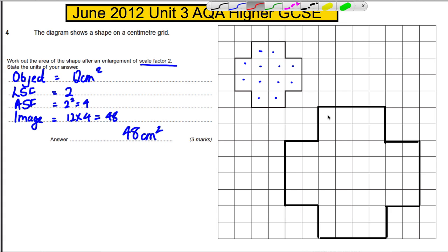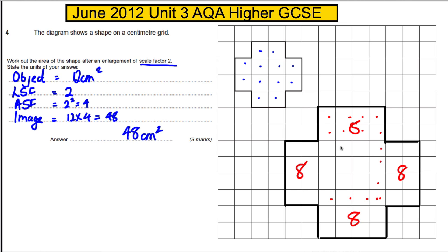And if you count these up: there'll be 8 here, and 8 here, and 16 in the middle. So 8 plus 8 plus 16 plus 16 is 48 centimetres squared. However, higher students should be doing it using area scale factors.